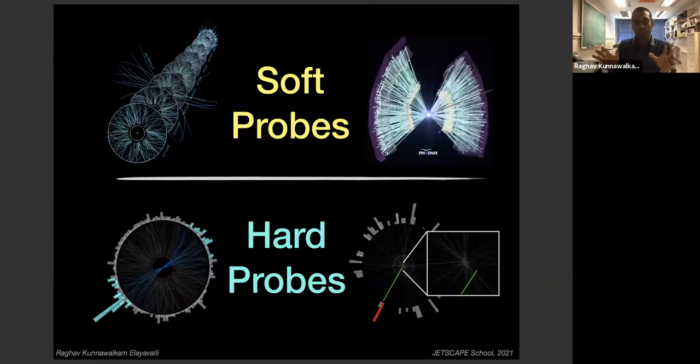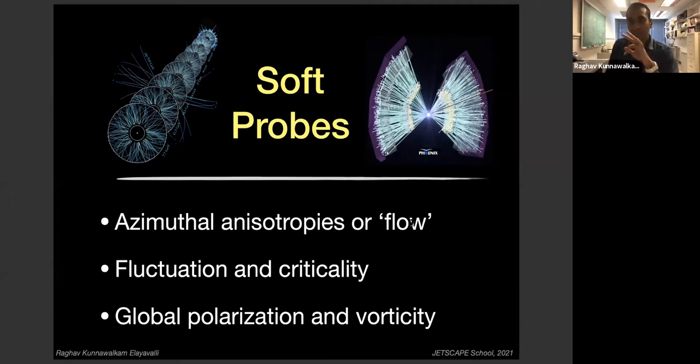So I'm going to base my talk in two broad sections. I'll first talk about the soft probes, what we learn from there, the bulk properties of the medium. And the second part will be focused on the hard probes, high Q squared processes that learn about the transport properties of the QGP. So there are three main points I'm going to talk about. This is by no means a comprehensive overview. We have 30 minutes, actually we have 25. So I cannot go through all the results. I'm going to pick and choose stuff that I think is quite cool and relevant for us to talk about in the context of Jetscape.